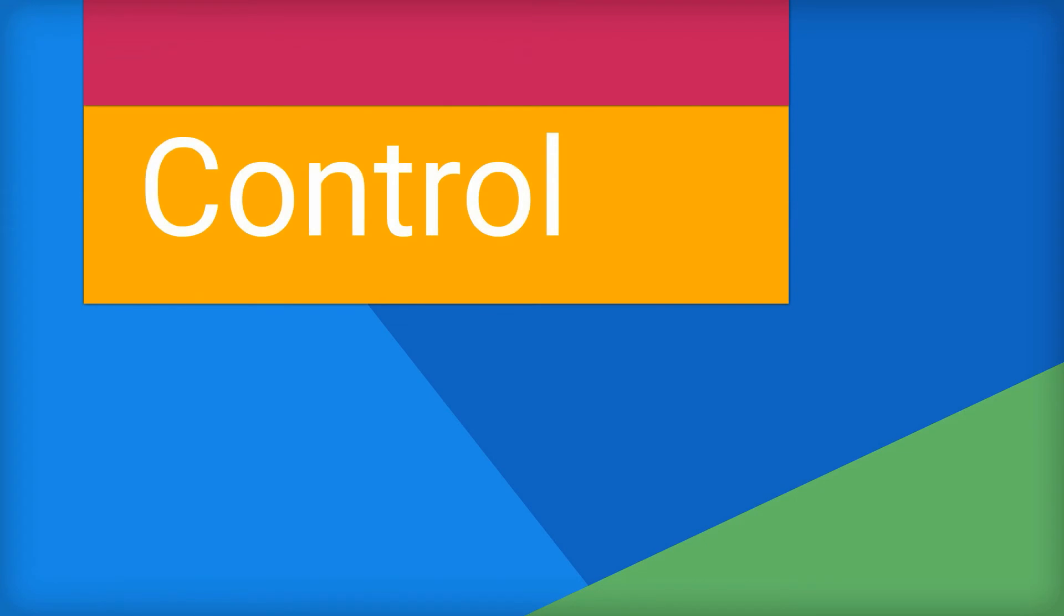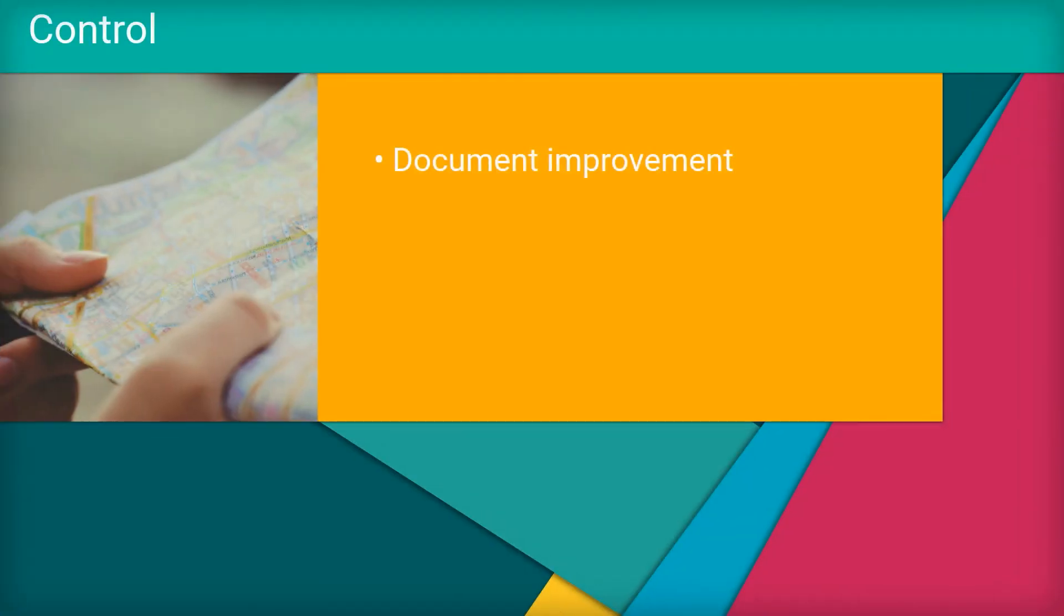The fifth and final DMAIC step is Control. In the Control phase, a business documents lessons learned to maintain performance improvement and implement the same improvements where appropriate in other areas of the business.